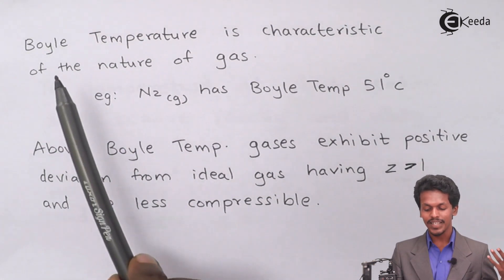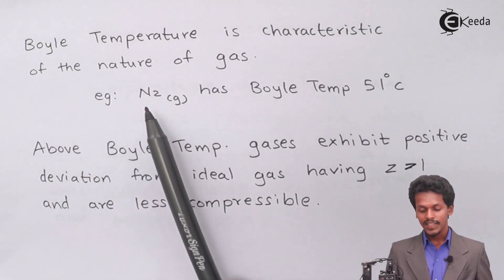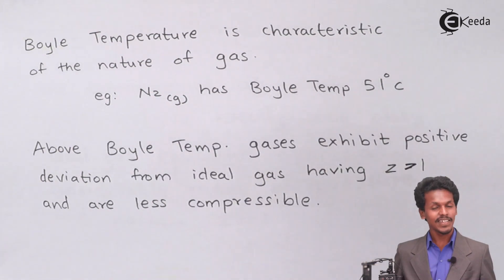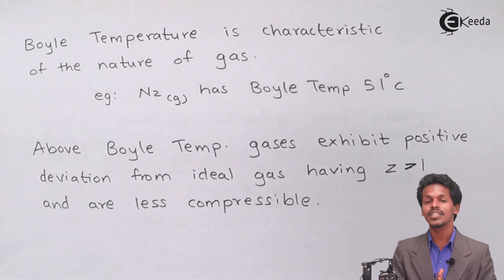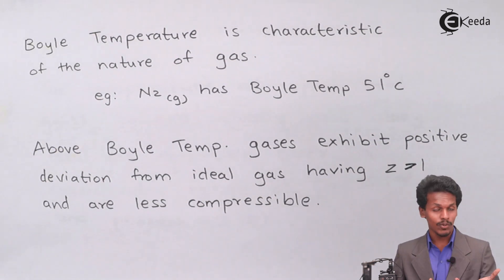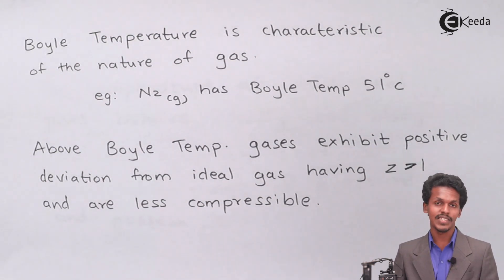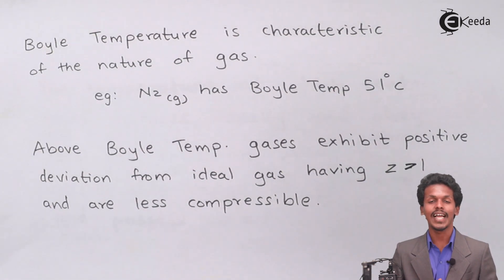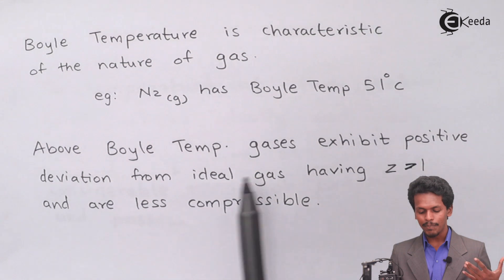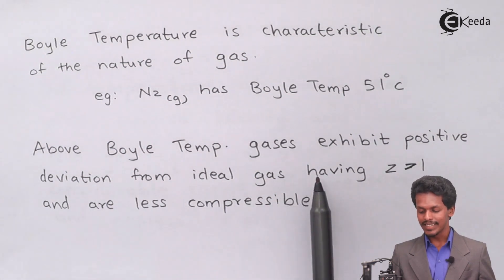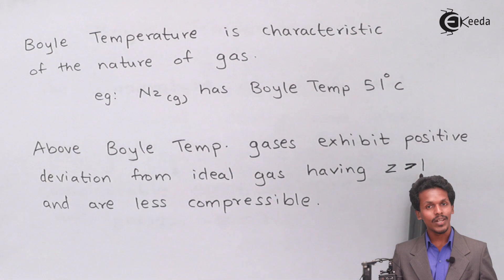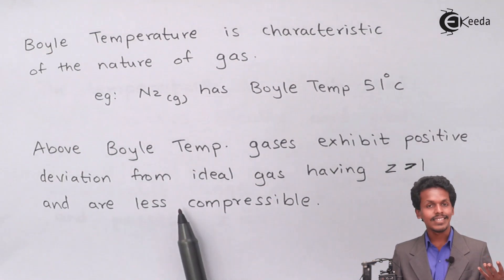The Boyle temperature is a characteristic of the nature of a gas. For example, nitrogen gas has a Boyle temperature of 51 degrees Celsius. At this temperature, nitrogen gas will behave ideally and will possess Z equals to 1. Now, above the Boyle temperature, a gas exhibits positive deviation from ideal gas behavior, having a compressibility factor Z greater than 1, and is less compressible.